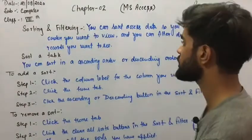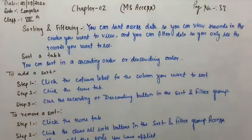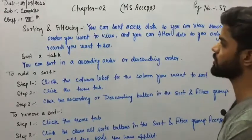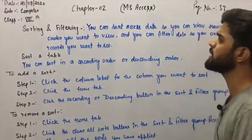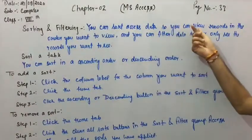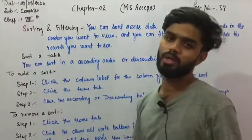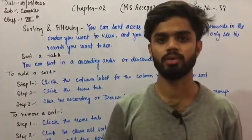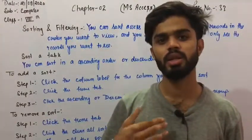Now what definitions say: You can sort access data so you can view records in the order you want to view, and you can filter data so you only see the records you want to see. It means with the help of sorting, you can use records in the order. It means whatever data you have, if you have thousands of data, then you can see.